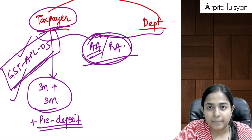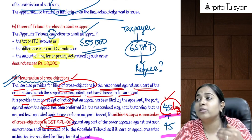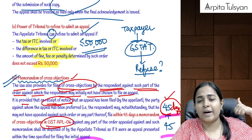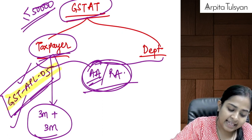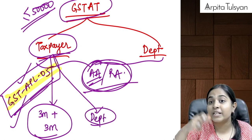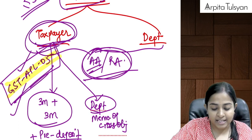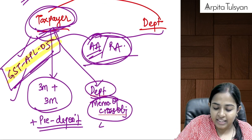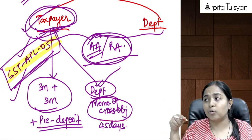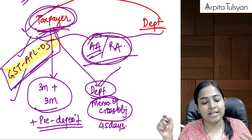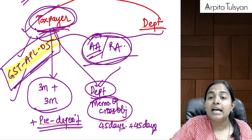GSTAT may refuse to admit the appeal if the disputed tax amount does not exceed ₹50,000. When the taxpayer files an appeal, the department as the opposite party is given an opportunity to submit a memorandum of cross objection within 45 days from the date they come to know of the appeal, with a further condonation of 45 days for sufficient cause.